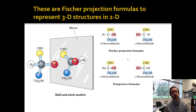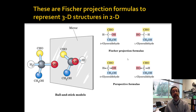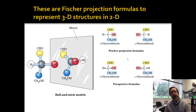Fischer projections follow a simple rule: up and down means the bond is going away from you; right and left means it's coming towards you. These are important for establishing exact chirality. In a Fischer projection, if you have the mirror image, it will also be the mirror image in a 3D representation. That's why if you have the OH to the right at the last carbon, you have a D sugar; if it's to the left, you have an L sugar.